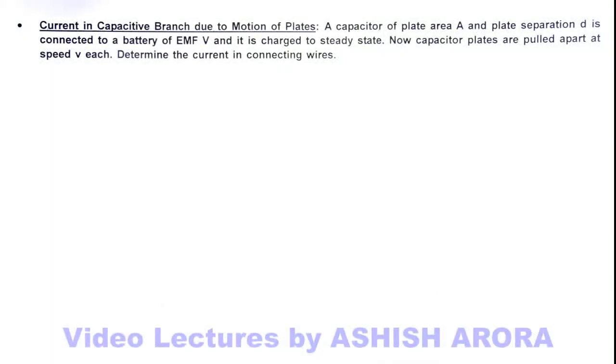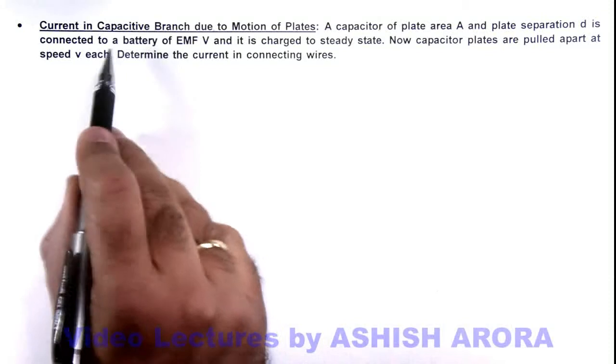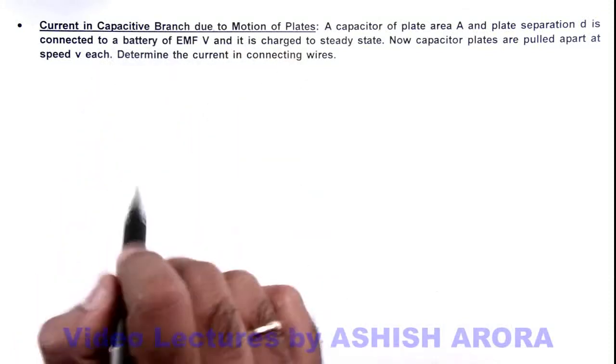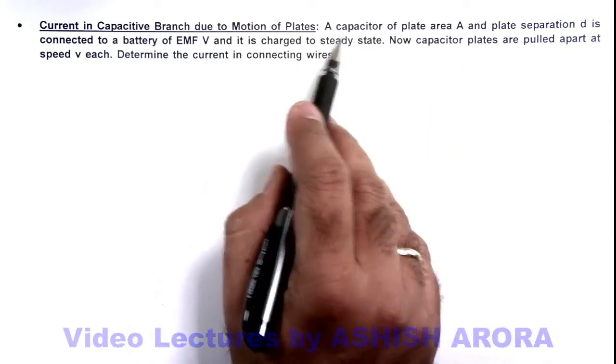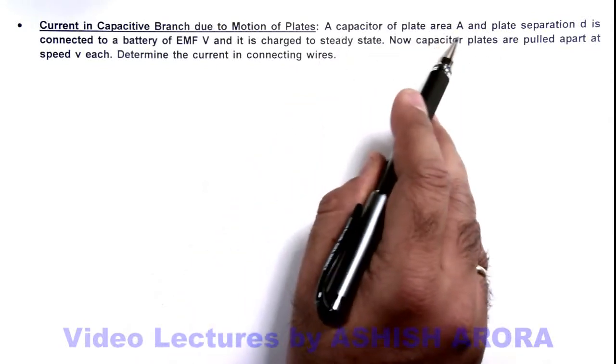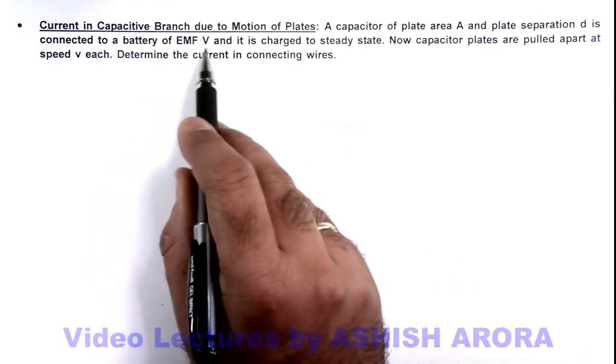In this illustration, we'll study about the current in capacitor branch due to motion of plates. Here we are given a situation in which a capacitor of plate area A and plate separation d is connected to a battery of EMF V.